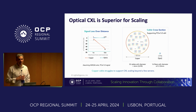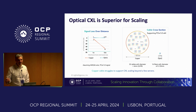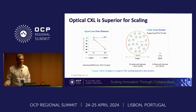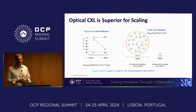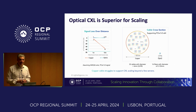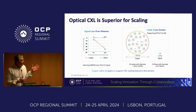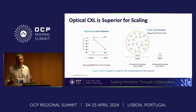Why do we need optics? There were many talks on sustainability yesterday. Signal loss over distance is many tens of dB with copper — the best PCI copper cables are maybe two meters at Gen 5 speeds, and Gen 6 and Gen 7 are going to be much worse. Versus optics: extremely low loss over meters, hundreds of meters, and even further.